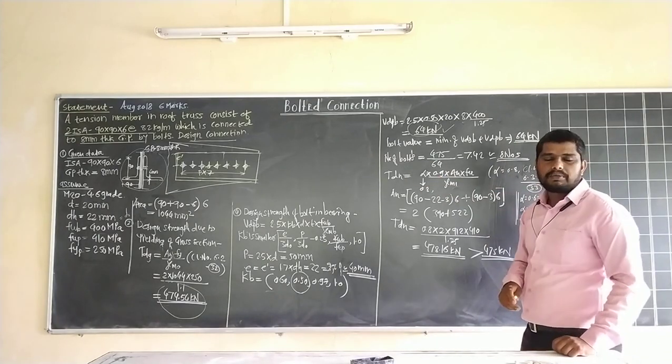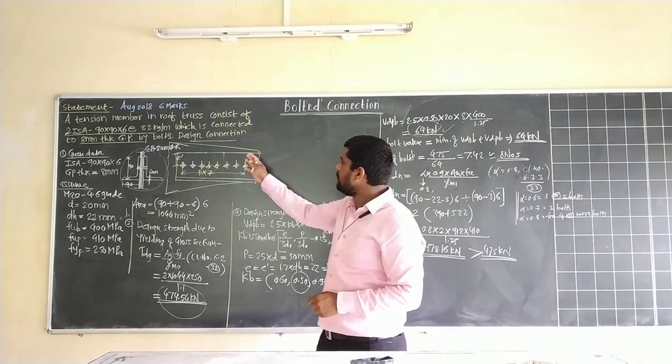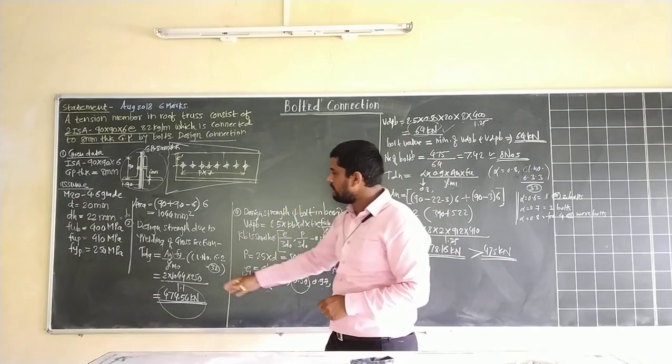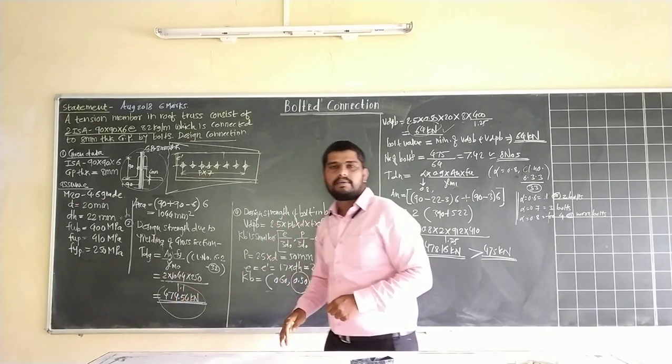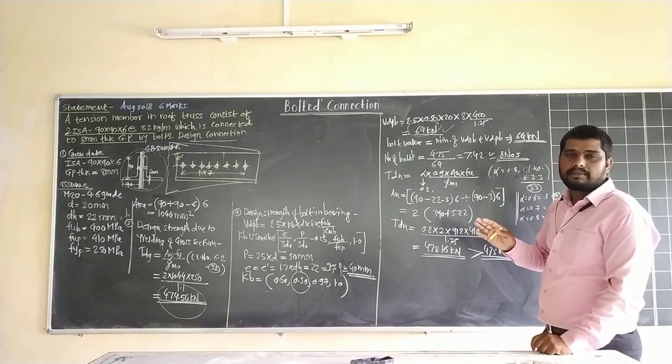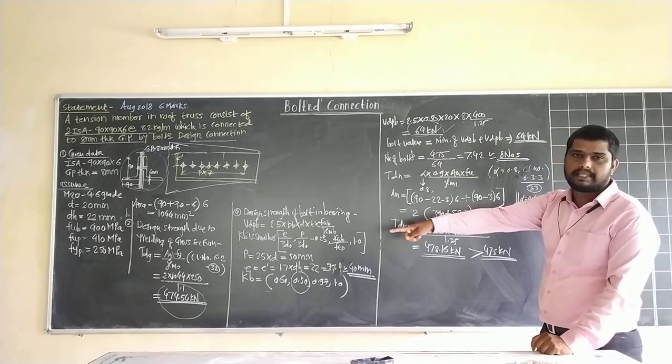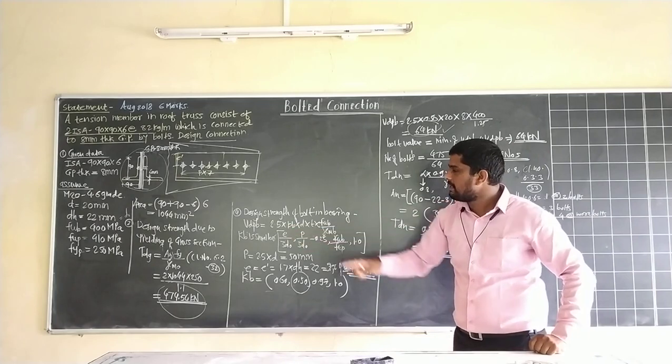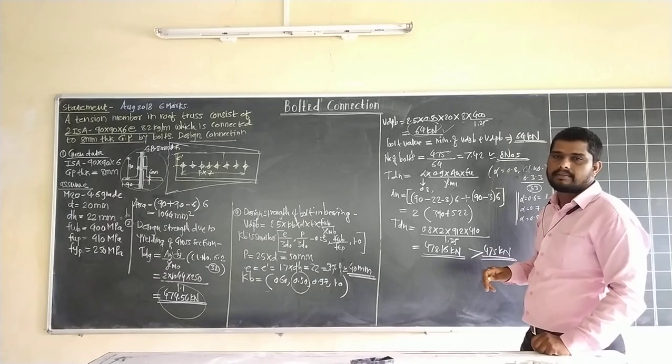Number of bolts: In this statement we don't know the maximum load value. So we calculated T_DG value, 474.54 kN. If factored load or force is not mentioned in the numerical, we find T_DG using formula A_G into F_Y divided by gamma_M0.